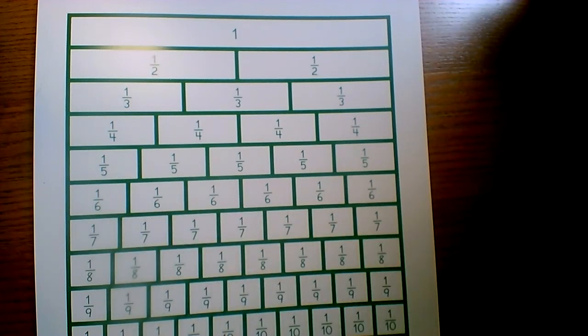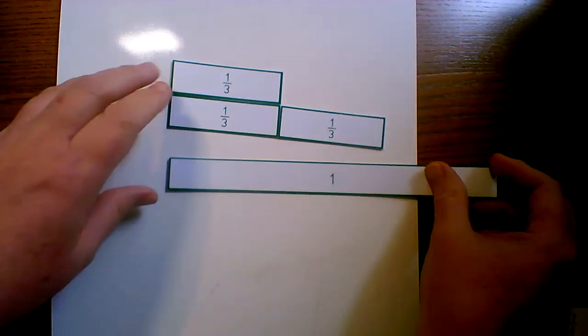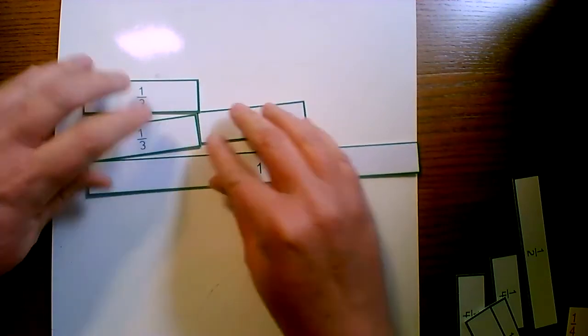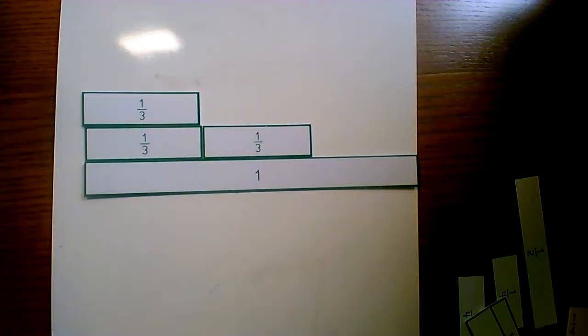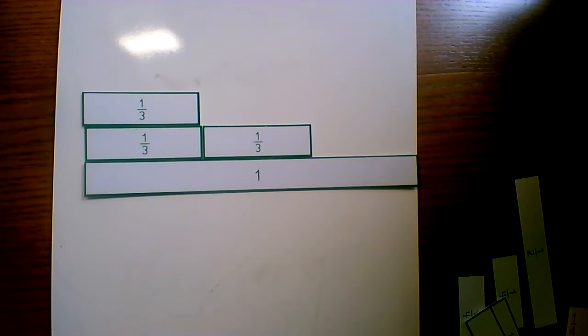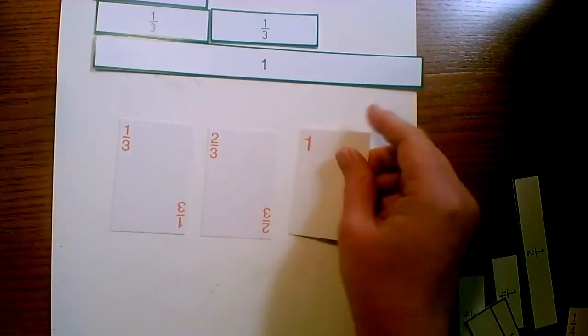The other thing we're going to work on is building fraction stairs — another way to look at the skip counting patterns. Here's how I would build the fraction stairs for thirds: there's one third, here's two thirds, and one. One third, two thirds, and one. I can also represent this with the fraction cards: one third, two thirds, one.